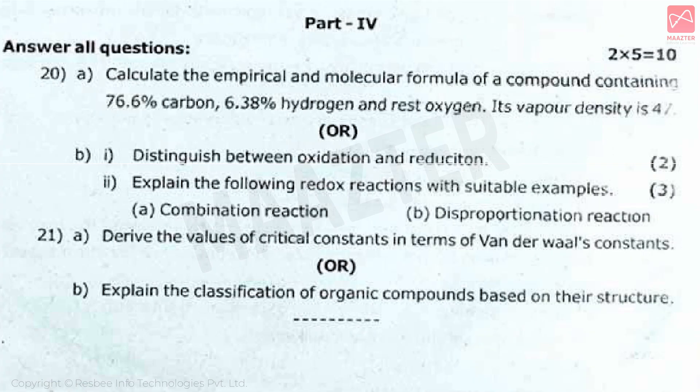In the 5-mark section, we have to attend 2 questions with choices. The first question: calculate the empirical and molecular formula of a compound containing 76.6% carbon, 6.38% hydrogen, and the rest oxygen. Its vapor density is 47. The alternative part B: distinguish between oxidation and reduction, and explain the following redox reactions with suitable examples — Part A, combination reaction, and Part B, disproportionation reaction.